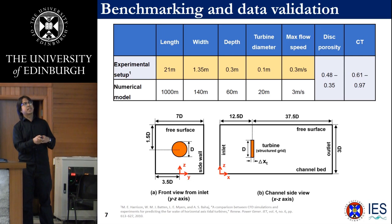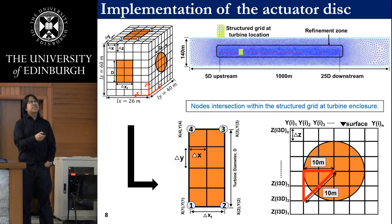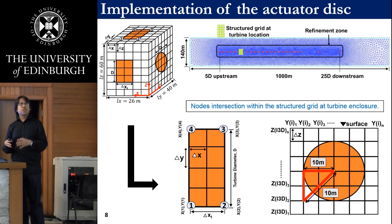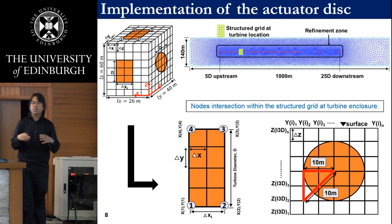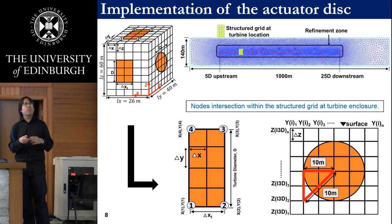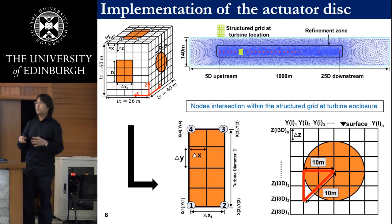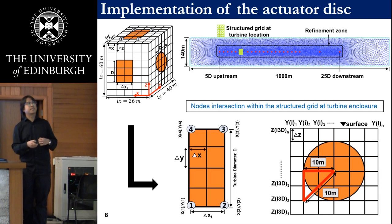For the implementation of the actuator disk in the numerical domain, a structured grid was specifically used to define the enclosure of the turbine, helping to maintain its shape when calculating the actuator disk momentum source term. The structured grid was purposely made larger than the turbine dimensions to allow for numerical tolerance during the momentum source term calculation. In this study, I used 24 vertical layers in the domain.